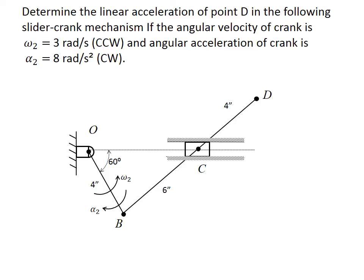In this problem, we have a slider crank where the coupler is extended to point D. We have an angular velocity of 3 radians per second counterclockwise on the crank, and also an angular acceleration of 8 radians per second squared clockwise. We want to determine the acceleration of point D.